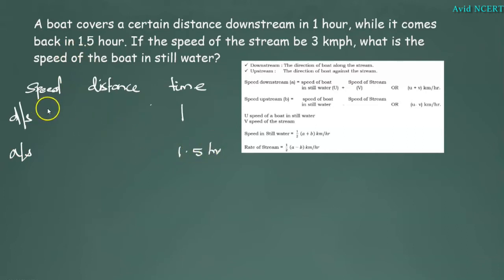The speed for downstream is SL plus SM, that is, the speed of boat in still water plus stream. And speed for upstream is SL minus SM, that is, the speed of boat in still water minus speed of stream. The distance is same, certain distance in both cases.